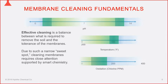For an acid wash, the pH range is 1.8 to 2.2; for an alkaline wash, it's between 10.8 and 11.2. We need to make sure we're not cleaning too cold or too hot, because too high a temperature can damage the membranes, and too cold a temperature results in ineffective cleaning.